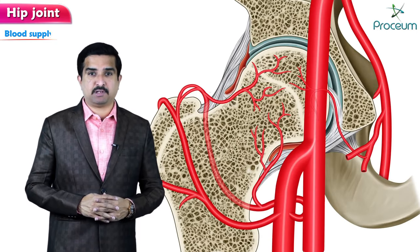Now let us concentrate on the nerve supply of the hip joint. The innervation comes anteriorly from the femoral nerve, which is the main nerve; inferiorly from the anterior division of the obturator nerve; laterally from the articular branch of the sciatic nerve; and posteriorly from the nerve to quadratus femoris as well as the superior gluteal nerve. The main nerve to remember is the femoral nerve.